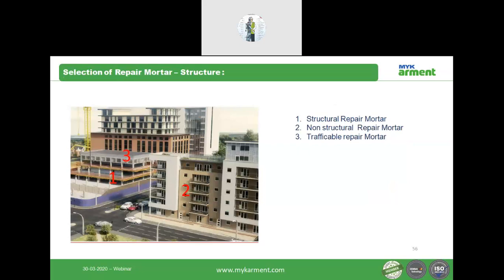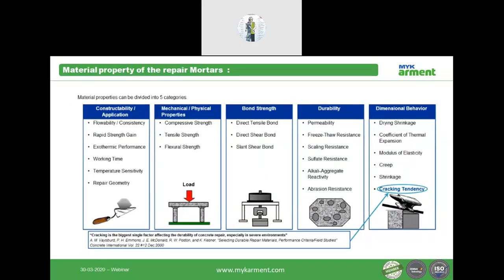For structural members, a structural repair mortar must be used; for non-structural members, a non-structural repair mortar; and for car parking or trafficable surfaces, a trafficable repair mortar. The material properties of a repair mortar are divided into five categories: constructability and applications, mechanical and physical properties, bond strength, durability, and dimensional behavior. Constructability covers flowability, thixotropy, rate of strength gain, working time, temperature sensitivity, and repair geometry.